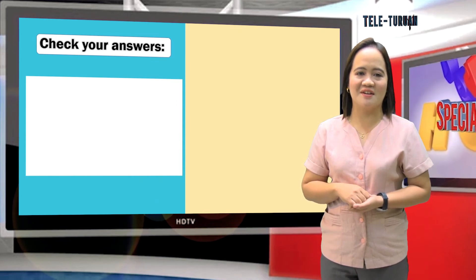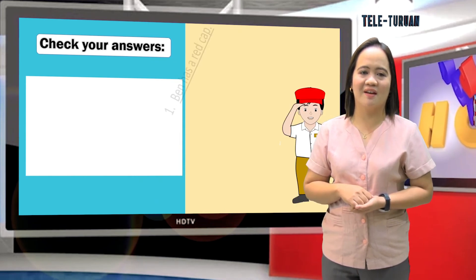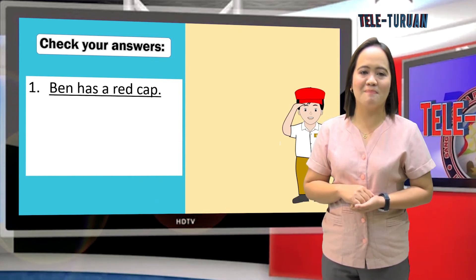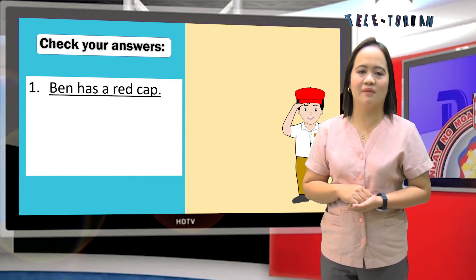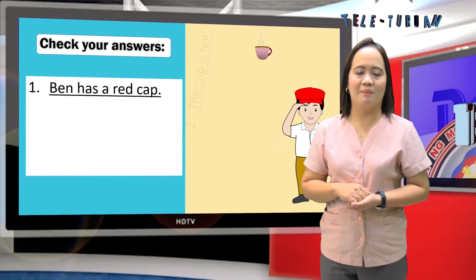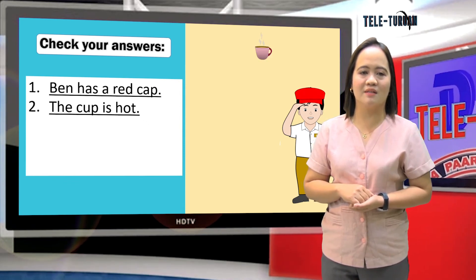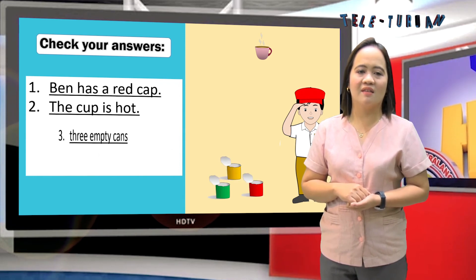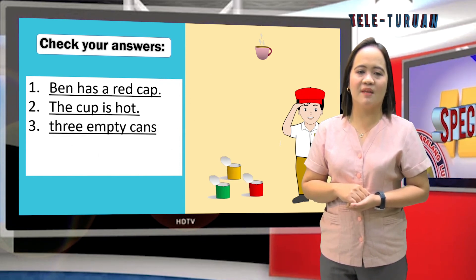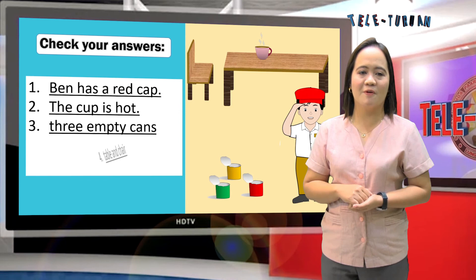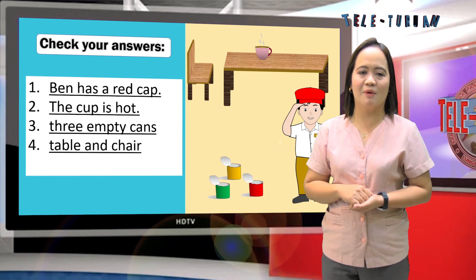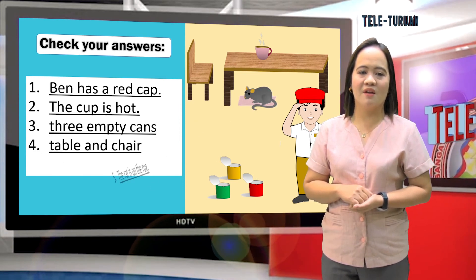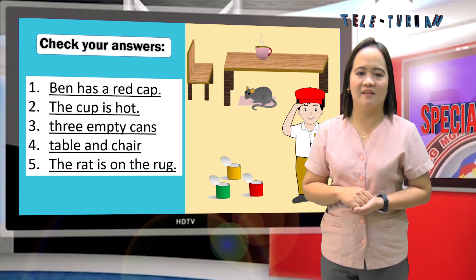Let's check — here are the answers. Number 1: the correct answer is Ben has a red cup. Number 2: the cup is hot. Number 3: three empty cans. Number 4: table and chair. Number 5: the rat is on the rug.